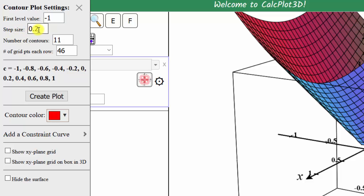The step size is 0.2. The number of contours is 11, which means the values of c start at negative one, and go up to the value of one by increments of 0.2. And of course, we can change these as needed.